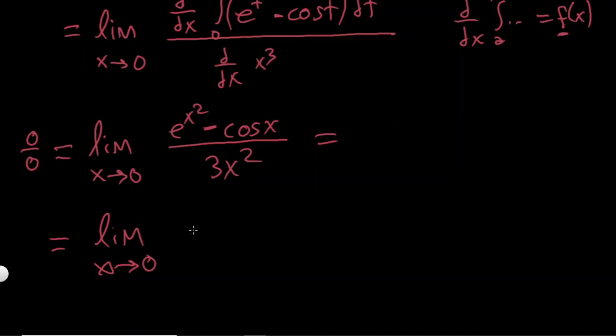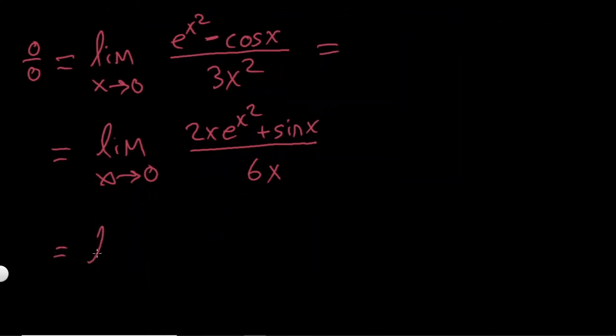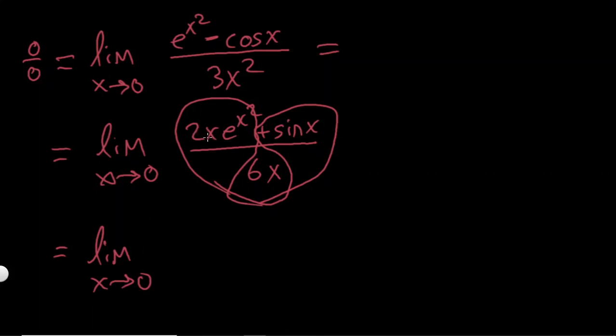If I differentiate this thing by the chain rule, it's going to be 2x e to the x squared, and this is going to be plus sin x over 6x. So here I can separate it, because I know that sin x over x has a limit, and if I separate this part, it's just going to be separated. Limit as x goes to 0, I'm separating it into two pieces, this and this. So from first, it will be 2x times e to the x squared over 6x, and two x's will cancel out, so it's going to give me e to the x squared over just 3.